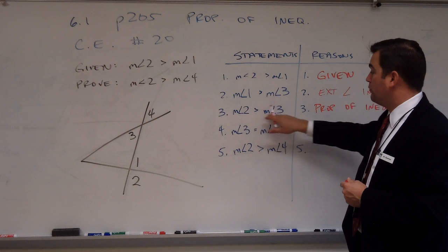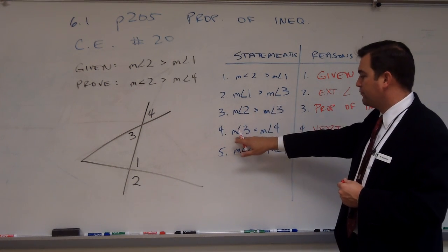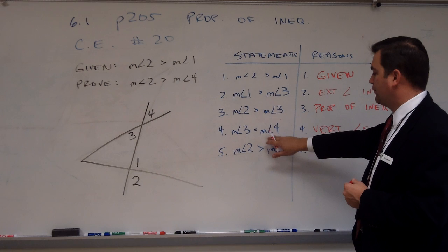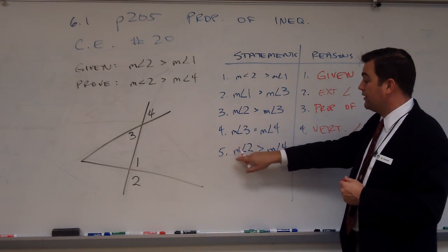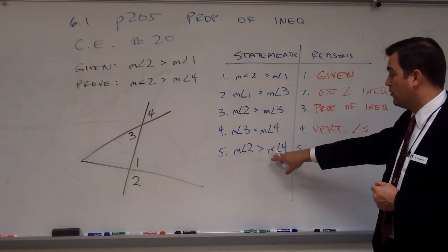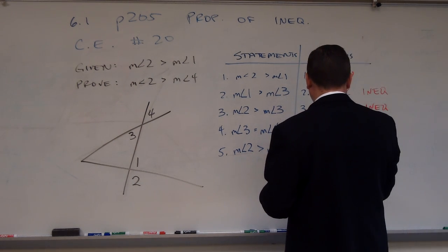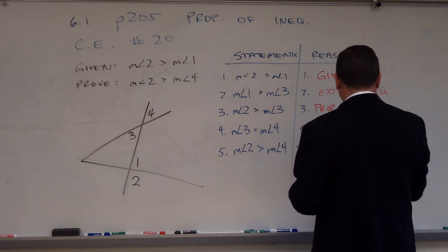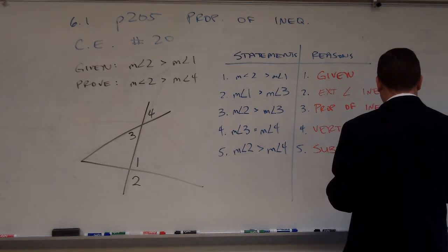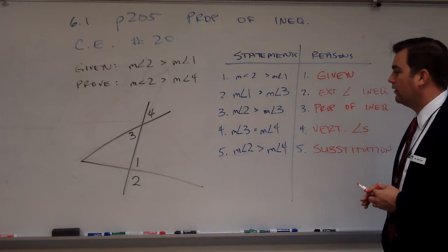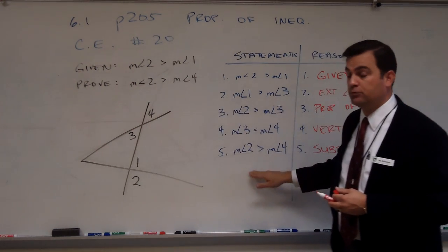Statement 5: if the measure of angle 2 is greater than the measure of angle 3, and the measure of angle 3 is equal to the measure of angle 4, then it follows that the measure of angle 2 is greater than the measure of angle 4 because of the substitution property of geometry. And that's what I was asked to prove, so this proof is done.